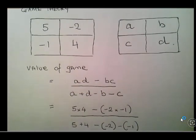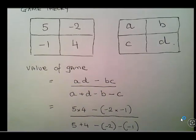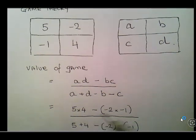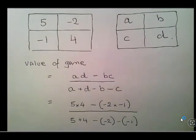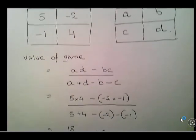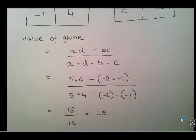A is 5 and D is 4, so 5 times 4 is 20. Then BC is minus 2 times minus 1, which is plus 2, so we have 20 minus 2, which is 18. For the denominator: 5 plus 4 minus minus 2 minus minus 1 — be careful with signs here — that gives us 12. So the value of the game is 18 over 12, which is 1.5.